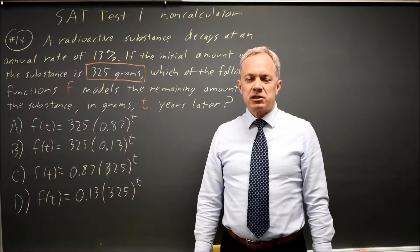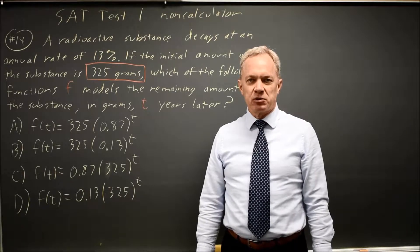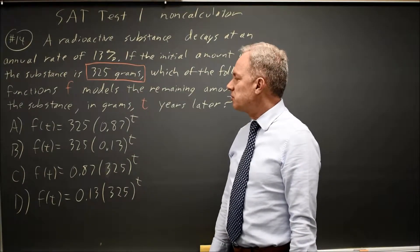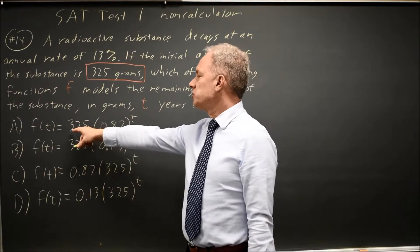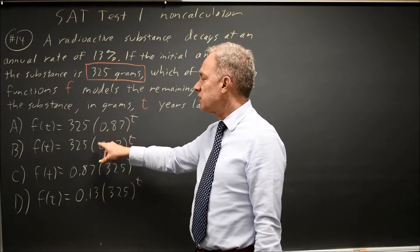If you have any issues with writing this equation, a good place to start is the correct equation should match at t equals 0. Since we started with 325 grams at t equals 0, choice A gives you 325 times something to the 0, and anything to the 0 is 1, so that works.